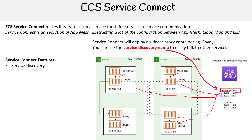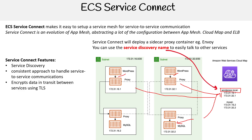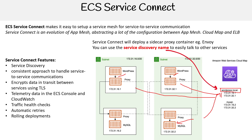Some of the features include service discovery, a consistent approach to handle service-to-service communication, encryption of data in transit between services using TLS, telemetry data in the ECS console and CloudWatch, traffic health checks, and automatic retries on redeployments. A lot of functionality here.